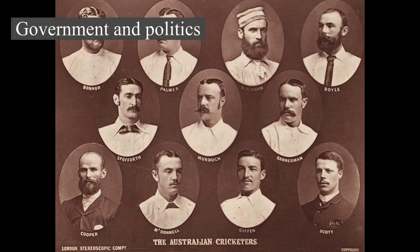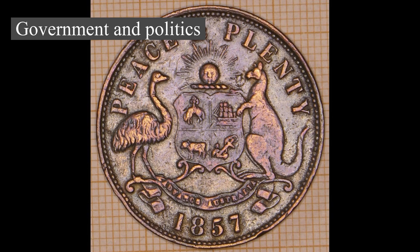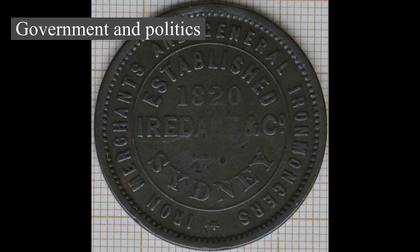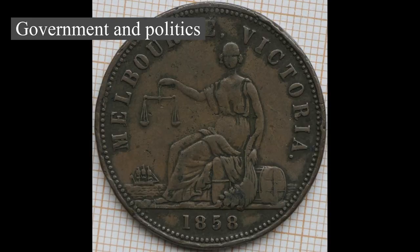Australia is a federal parliamentary constitutional monarchy. The country has maintained a stable liberal democratic political system under its constitution, one of the world's oldest, since federation in 1901. It is also one of the world's oldest federations, in which power is divided between the federal and state and territorial governments. The Australian system of government combines elements derived from the political systems of the United Kingdom — a fused executive, constitutional monarchy, and strong party discipline — and the United States — federalism, a written constitution, and strong bicameralism with an elected upper house — along with distinctive indigenous features. The federal government is separated into three branches: legislature — the bicameral parliament, comprising the monarch represented by the governor-general, the Senate, and the House of Representatives.